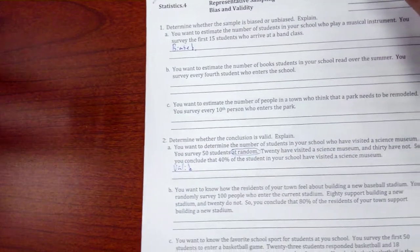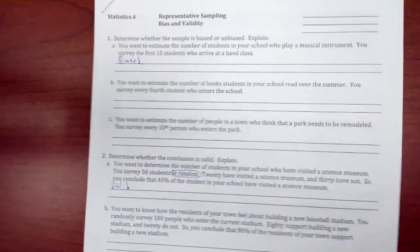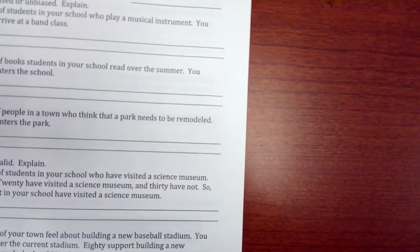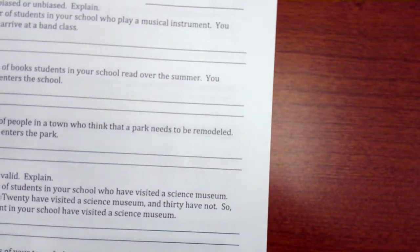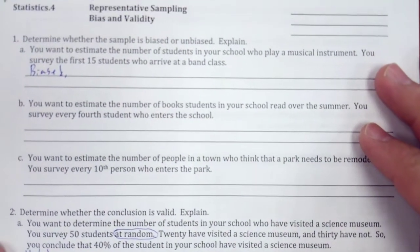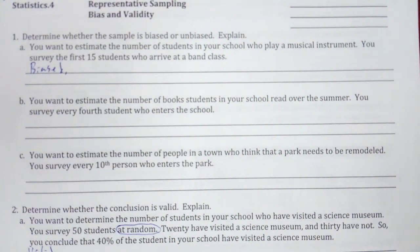Welcome back to The Math Goose, where in Math 7 we've been talking about statistics. Specifically in this video we're going to be talking about Statistics 4: representative sampling, bias, and validity.